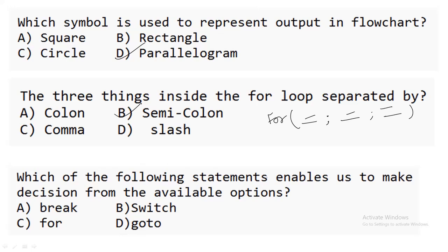The next question: which statement enables us to make decisions from available options? 'Break' breaks the flow of the program, 'for' is a loop, and 'goto' and 'continue' have their own functionality. Switch is used for decision making, so 'switch' is the correct answer.